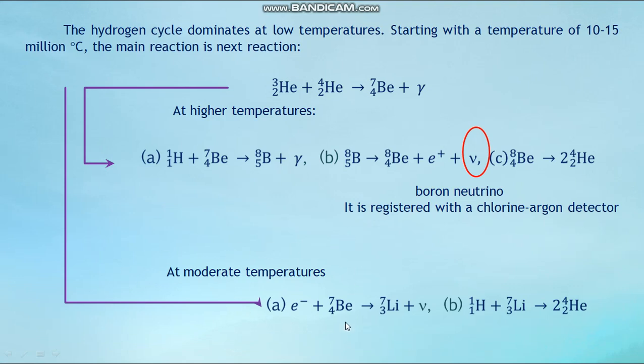For the first time, an artificial thermonuclear reaction was carried out in the USSR, and then six months later in the USA, in the form of an explosion of a hydrogen thermonuclear bomb, which is an uncontrolled reaction. An explosive was a mixture of deuterium and tritium, and a conventional atomic bomb was used as a fuse, with the explosion of which the necessary temperature for the thermonuclear reaction takes place.